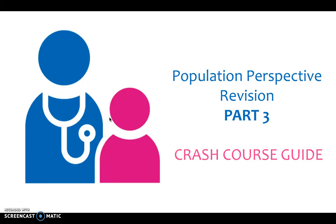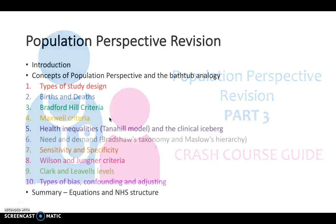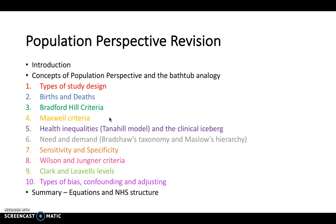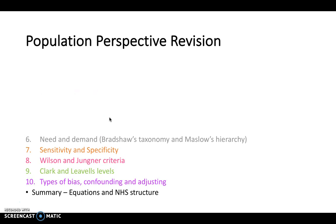Hello and welcome back to Crash Course. Today we're looking at the third and final part of the Population Perspective Revision. We'll cover the concept of need — Bradshaw's taxonomy and Maslow's hierarchy — as well as sensitivity and specificity, the Wilson and Jungner criteria for screening, and Clark and Leville's levels. We'll then revisit study designs by looking at bias, confounding and adjusting, finishing with some equations and the structure of the NHS, which is relevant to your exams.